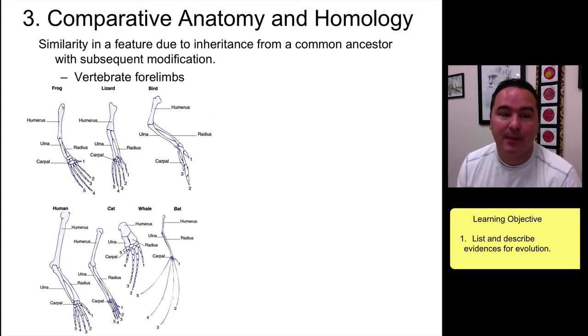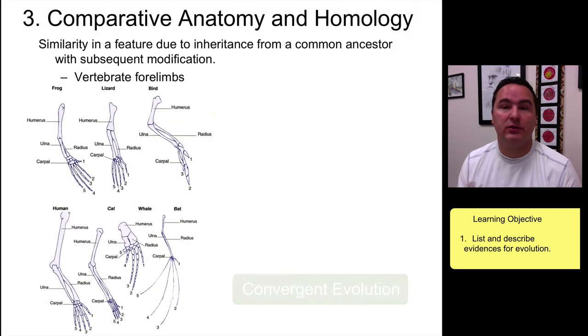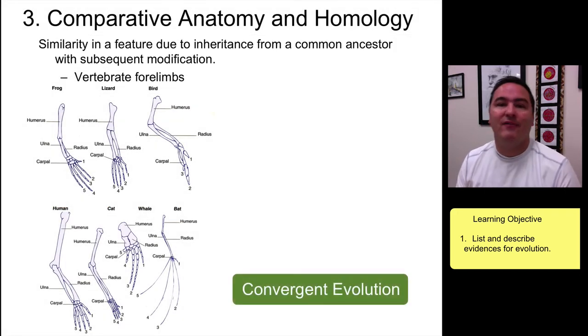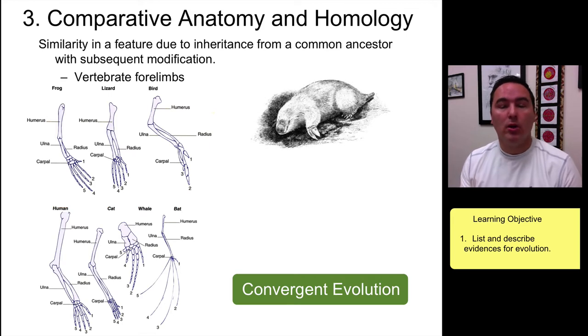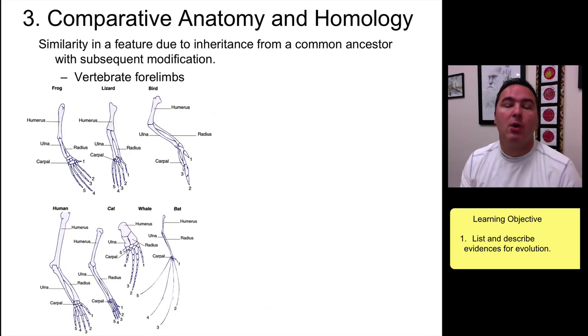Number three: comparative anatomy and homology. Homology is defined as similarity in a feature or structure that is due to common ancestry, because similarity could also be due to convergent evolution. When things are similar and that similarity is due to common ancestry, we call that being homologous.